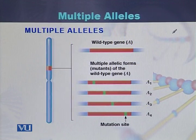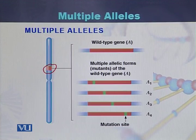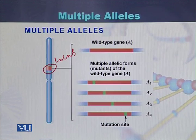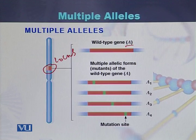Looking at this diagram to understand the concept of multiple alleles, we can see a structure of a chromosome. On the chromosome there is a position of a gene, which is called the locus of that gene. This gene has multiple alleles. Allele A can be considered as the wild type allele, but in addition to the wild type allele, there are many other allelic forms of this gene, called multiple allelic forms.